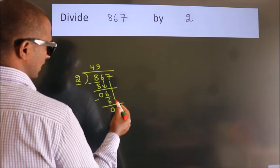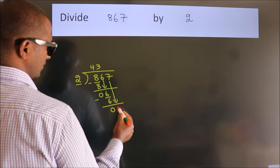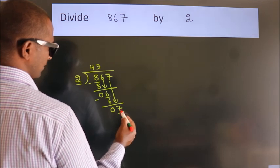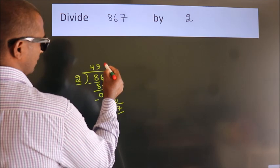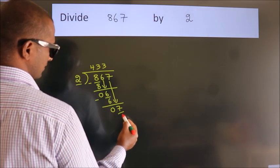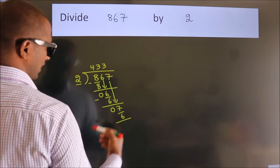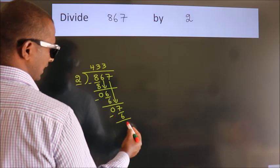After this, bring down the beside number. So, 7 down. A number close to 7 in 2 table is 2 threes, 6. Now, we subtract. We get 1.